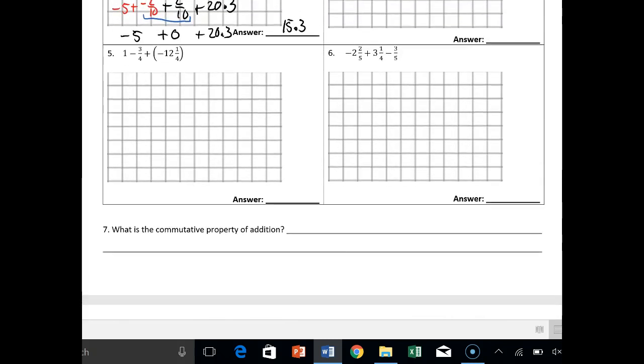Number 5, again any subtraction you see plus a negative or plus a positive, this plus sign locks that negative 12 in. So now let's just use the commutative property of addition, say negative 3 fourths plus a negative 12 and one fourth plus 1. I flipped those guys around because I wanted them to get them close together.